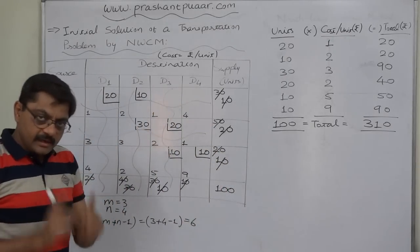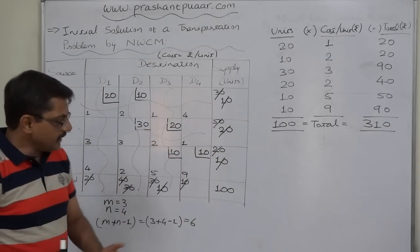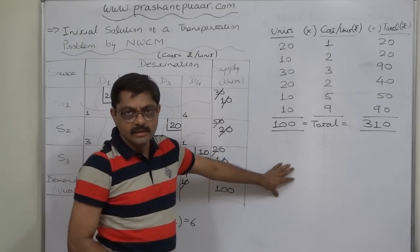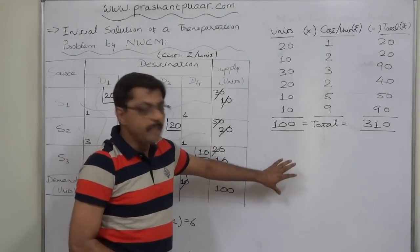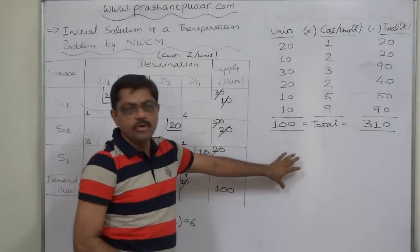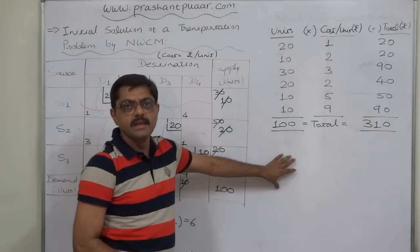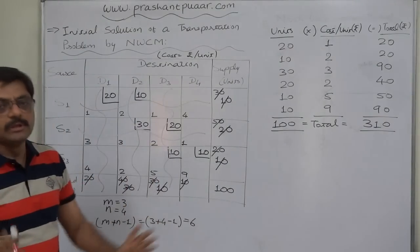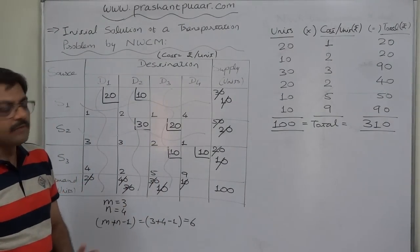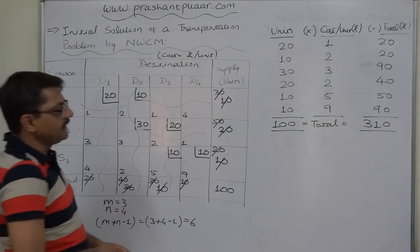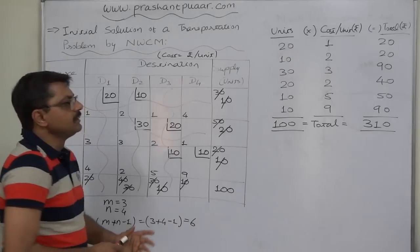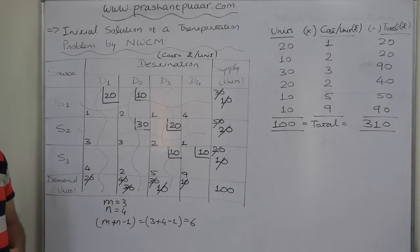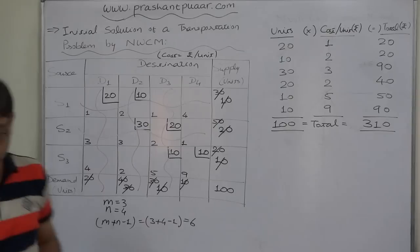Remember, this is the initial solution only — it may or may not be an optimal solution, and we have to check that. This was the Northwest Corner Method.